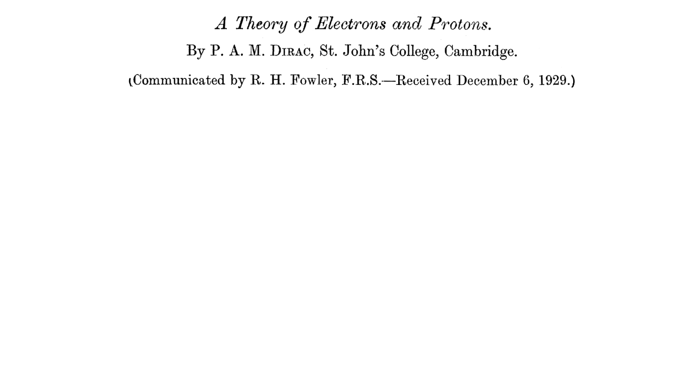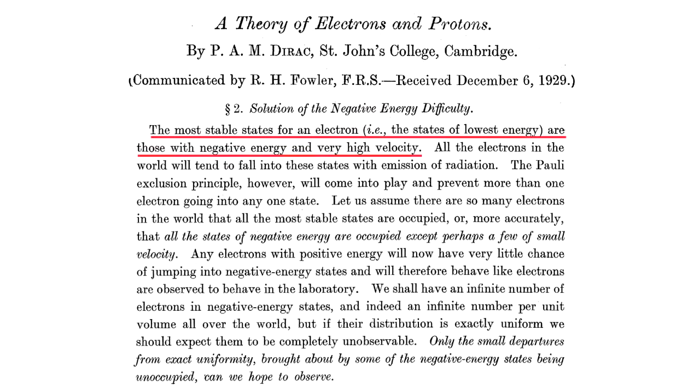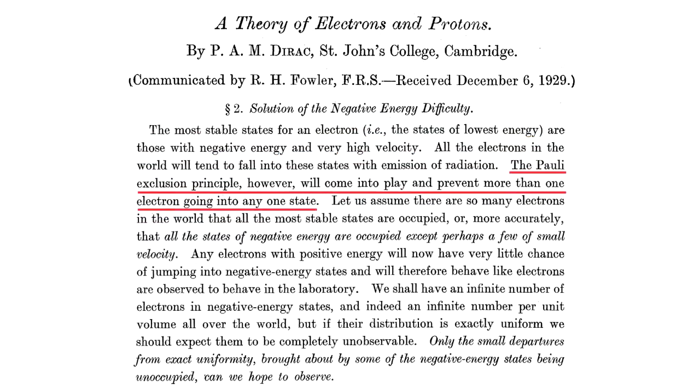In 1929, Dirac submitted a workaround to this problem in a paper titled A Theory of Electrons and Protons. In the section subtitled Solution of the Negative Energy Difficulty, after noting the problem, he offered a solution.